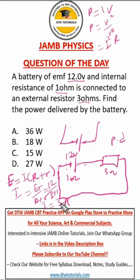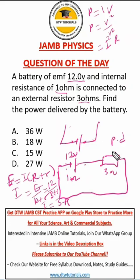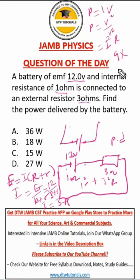We have our current. It says find the power delivered by the battery. The power delivered by the battery is the power it delivers to the cell itself, because the cell has an internal resistance, and also the power it delivers to the external resistor. So it would be I²r plus I²R. I²r: I is 3, so that's 3 squared times r. r is 1, so 9 times 1 gives us 9.